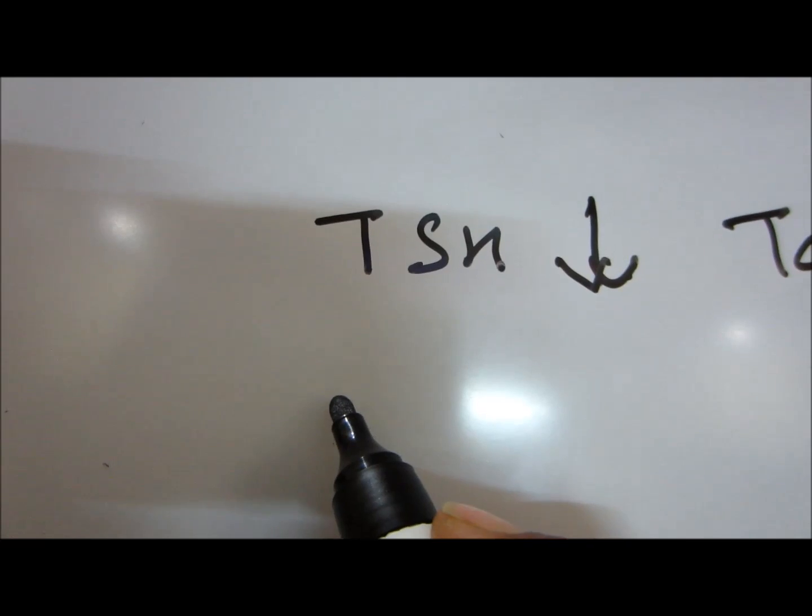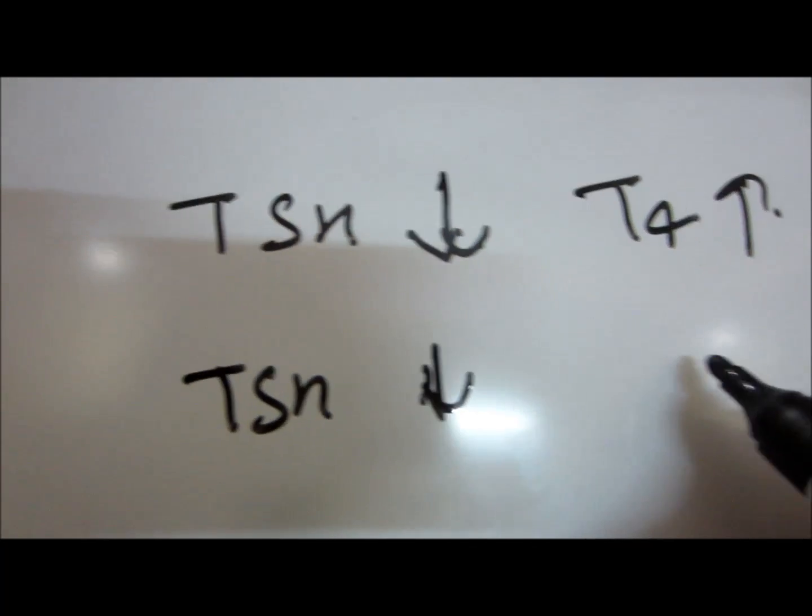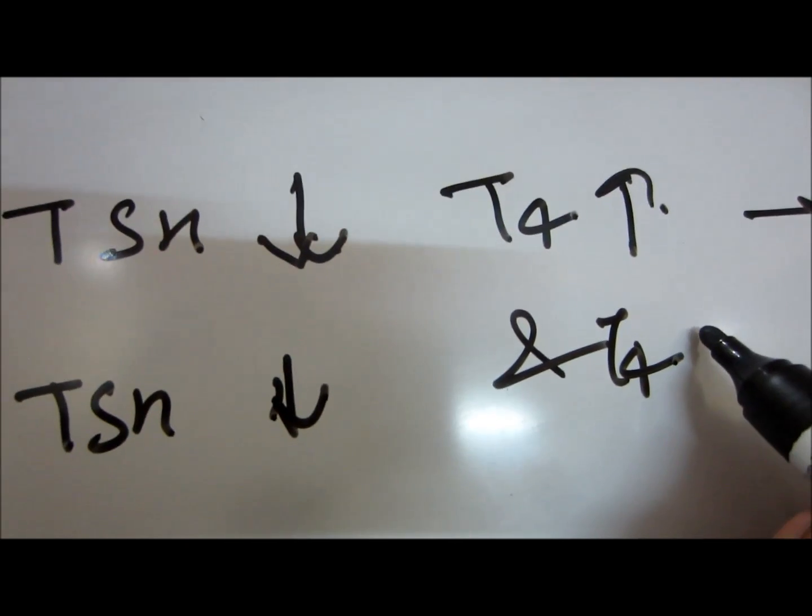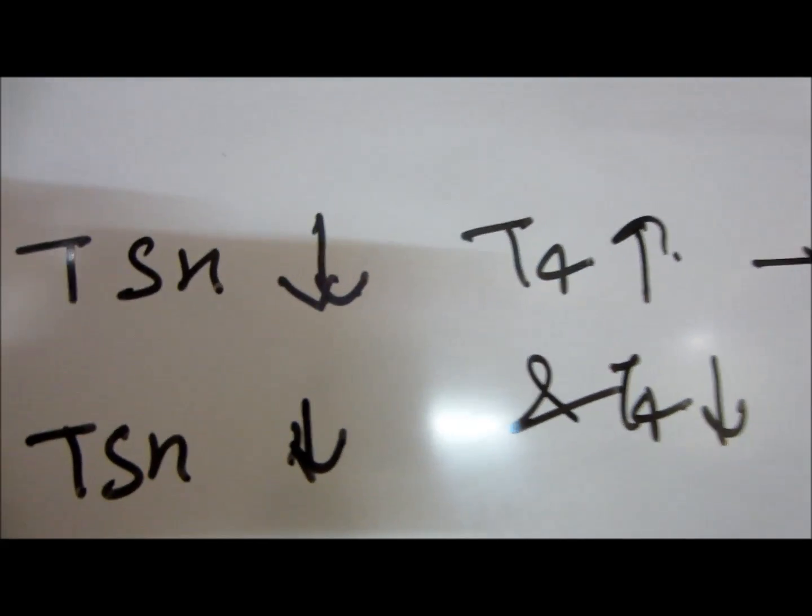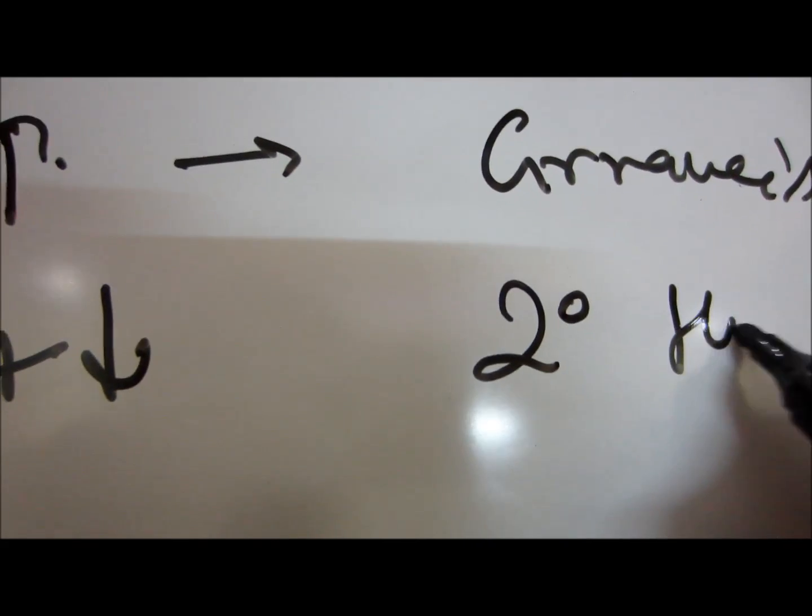Now if TSH level is low and T4 levels are also low, this condition is known as secondary hypothyroidism.